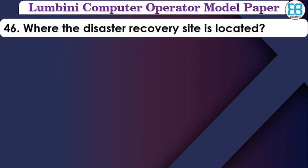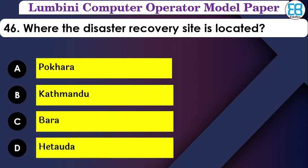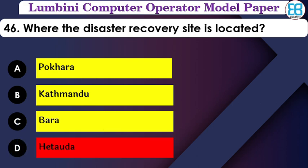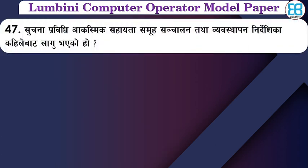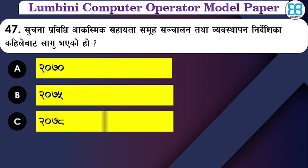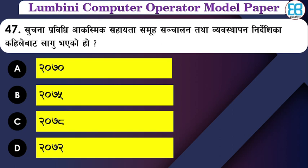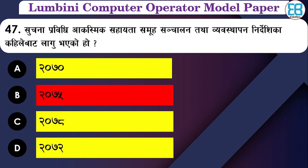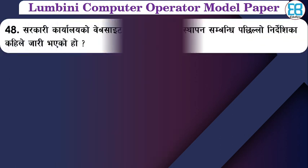Where is a disaster recovery site located? The options include different locations. The correct option is that a disaster recovery site should be located far from the primary site — typically a third location — to ensure recovery is possible in case of a disaster.